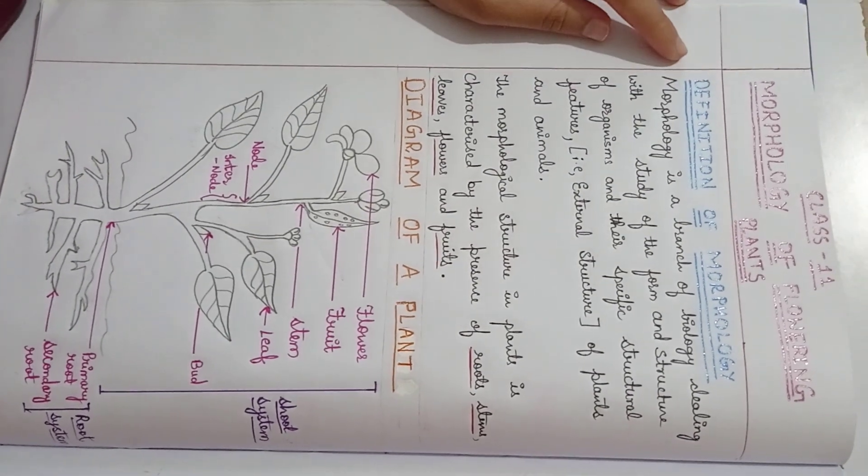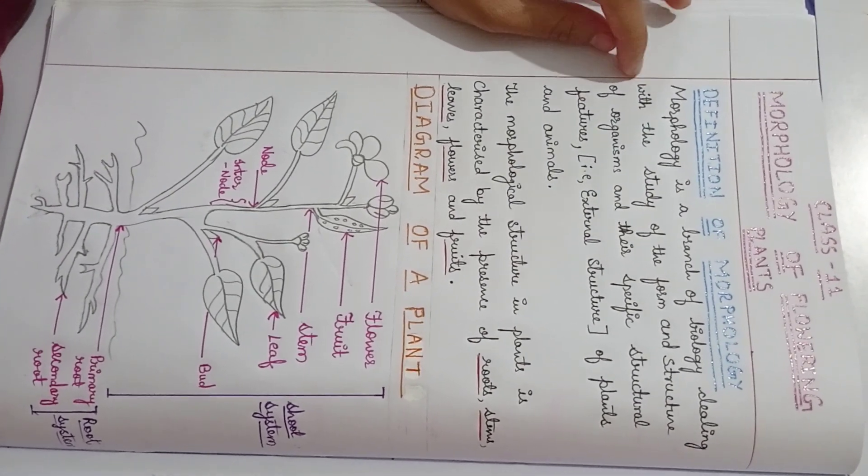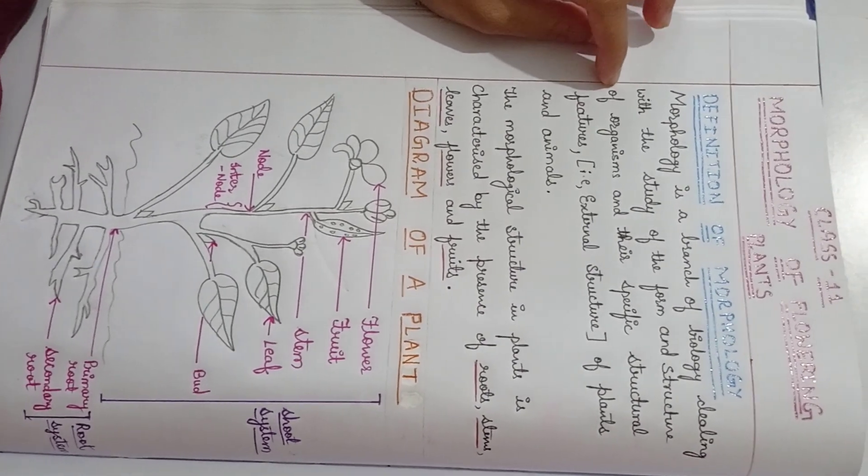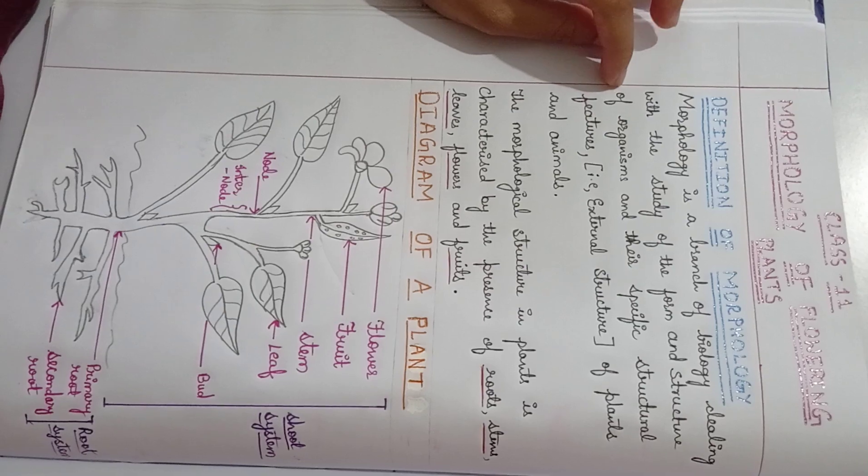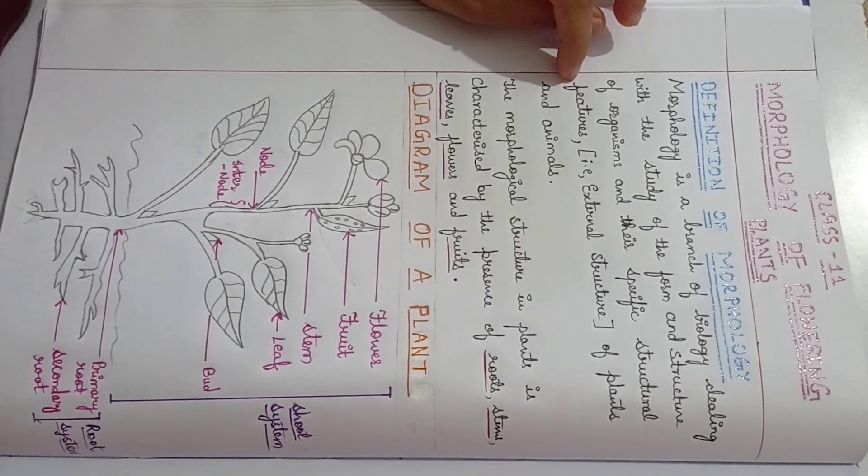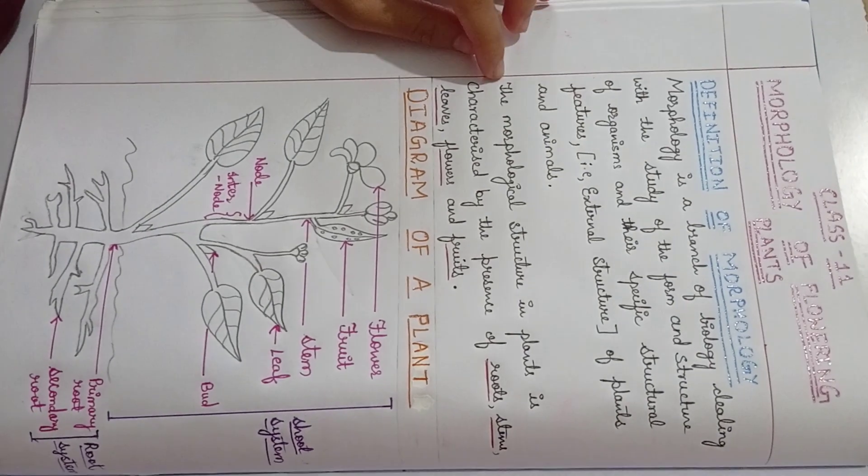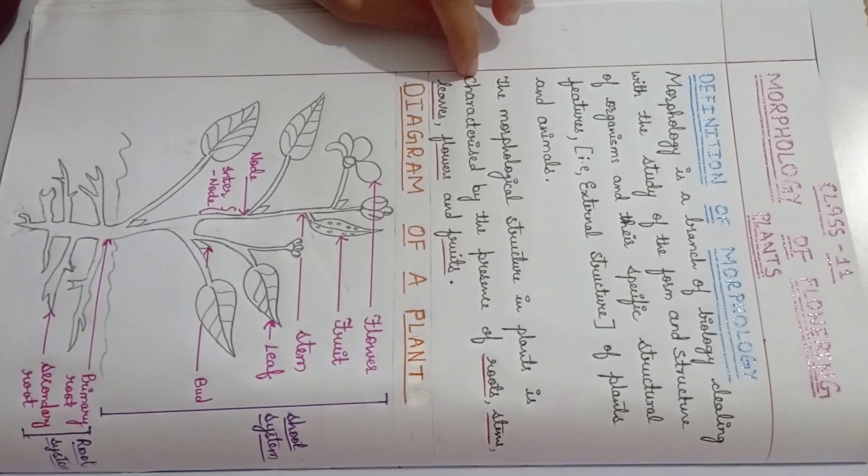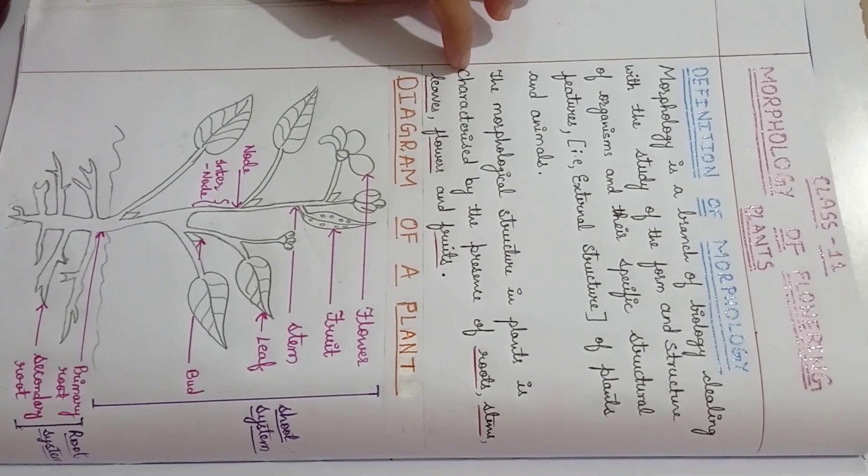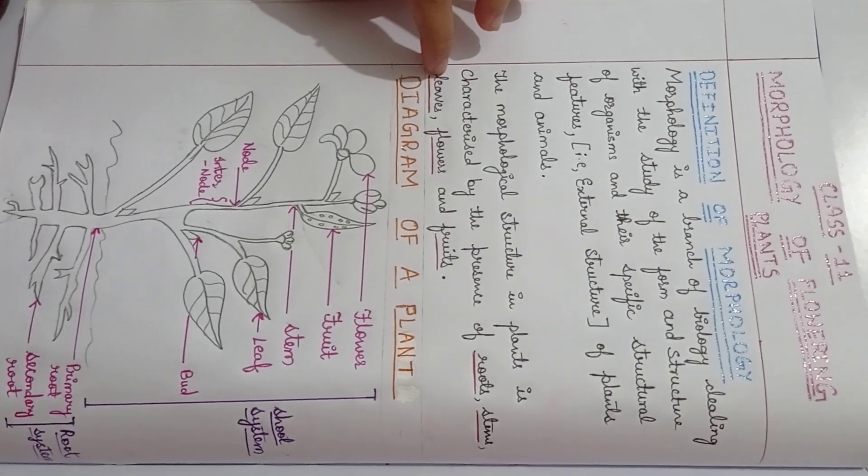Definition of morphology: Morphology is a branch of biology dealing with the study of the form and structure of organisms and their specific structural features, that is, the external structure of plants and animals. The morphological structure in plants is characterized by the presence of roots, stems, leaves, flowers, and fruits.